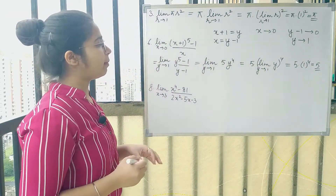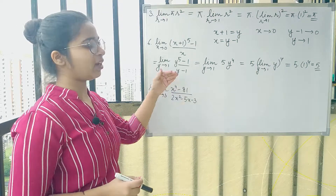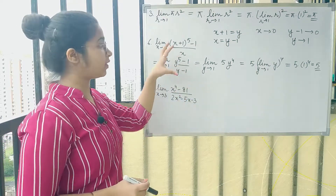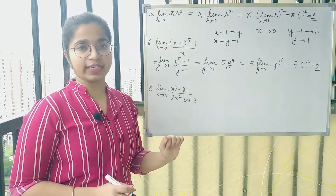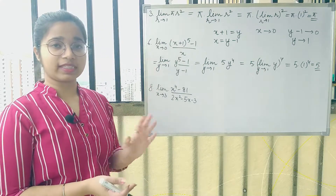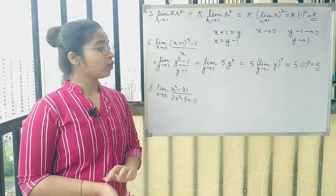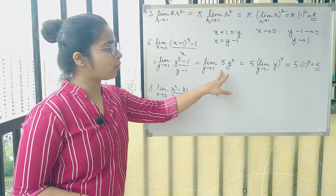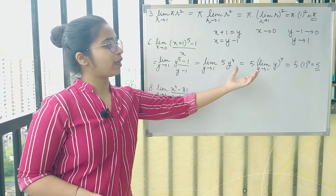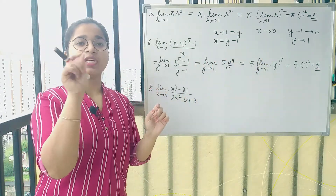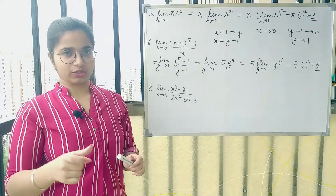Remember, initially when you are doing all these questions, write in each step why you are doing that particular step — why you took out the constant or why you changed the power. Just write the main theorem or notation as the reason.